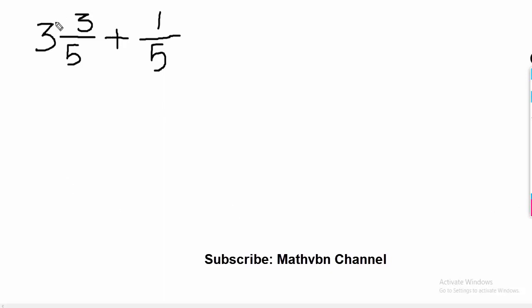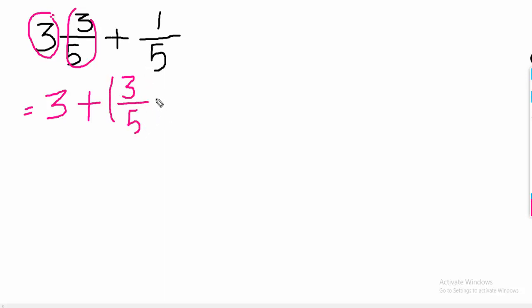The first, look at here, this is a whole number and this is a fraction. So, firstly you can separate this whole number, 3 plus this fraction, 3 over 5 plus 1 over 5.